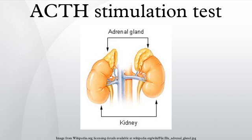Administration: Traditionally, cortisol and ACTH levels are drawn at baseline. Next, synthetic ACTH is injected IM or IV depending on the agent. Approximately 20 ml of heparinized venous blood is collected at 30 and 60 minutes after the synthetic ACTH injection to measure cortisol levels. ACTH samples are kept on ice and sent immediately to the laboratory, whereas cortisol does not need to be kept on ice.